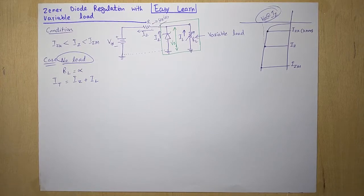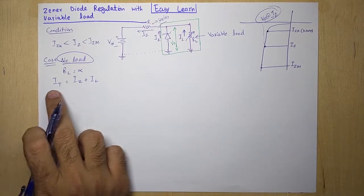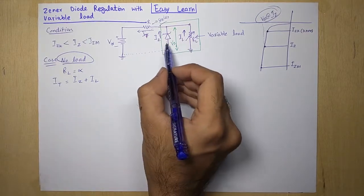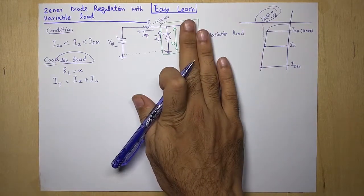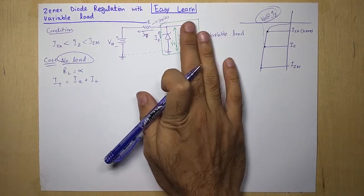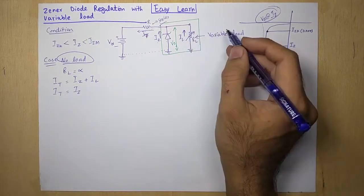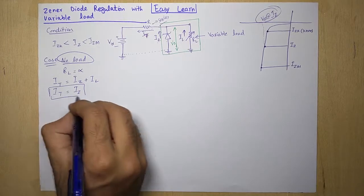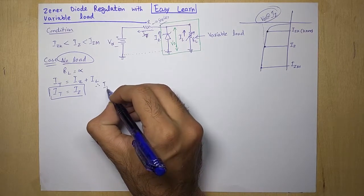So, I total equals IZ plus IL. In the no-load case, since there is no RL, there is no IL involved. So I total equals IZ only, and IL equals zero ampere at no-load condition.